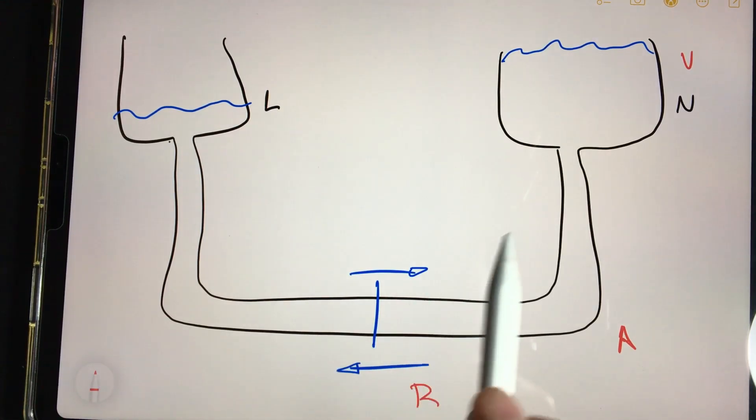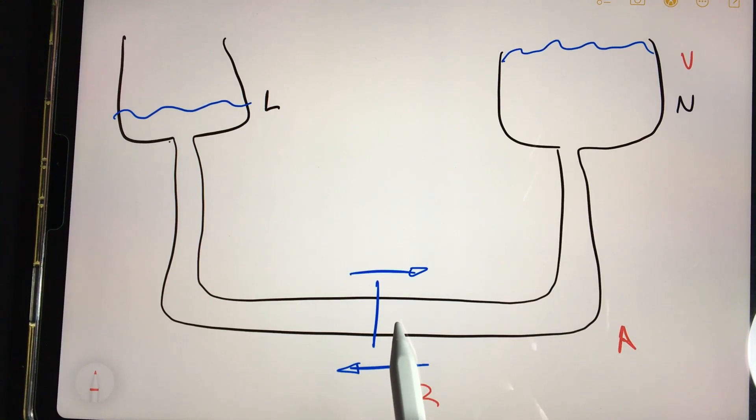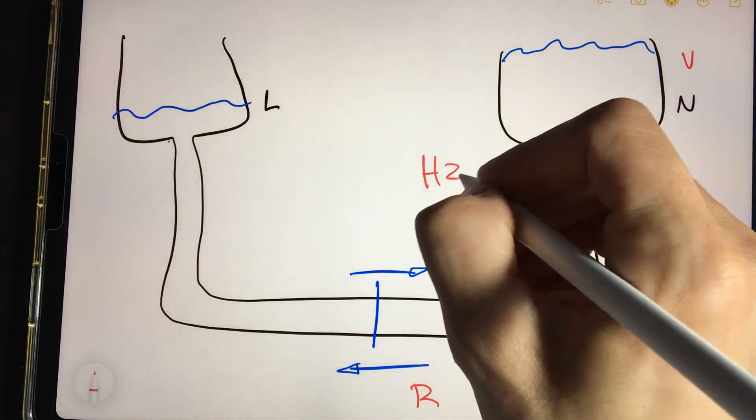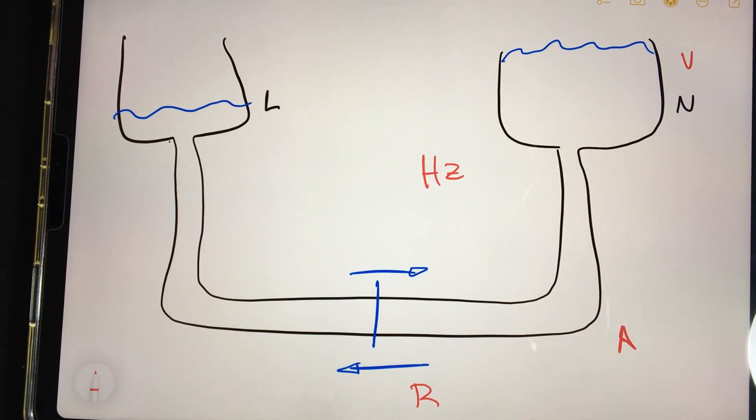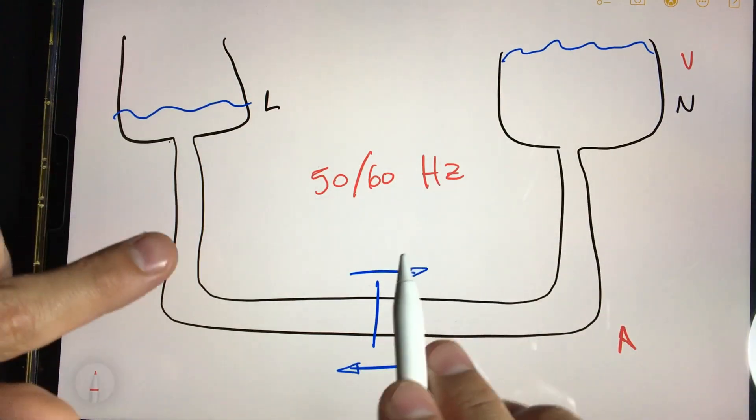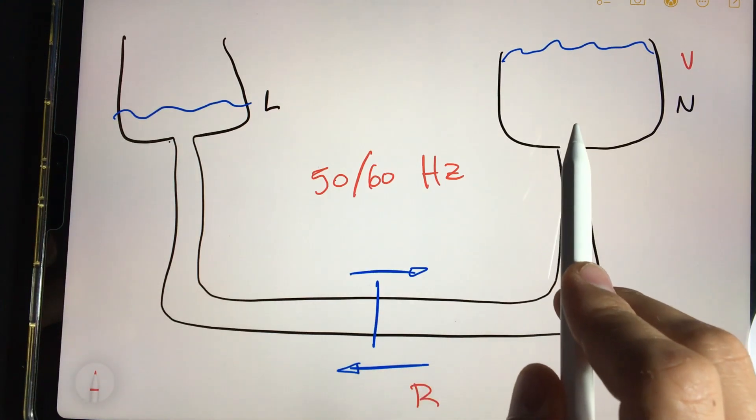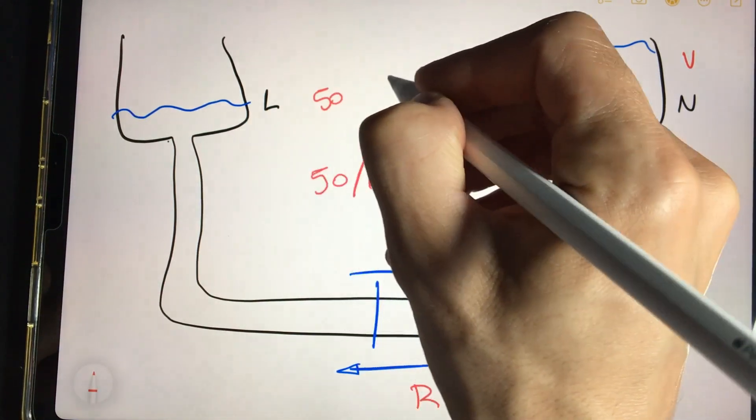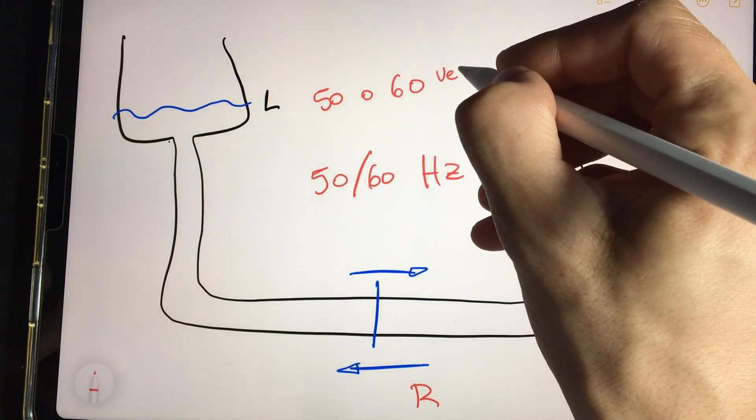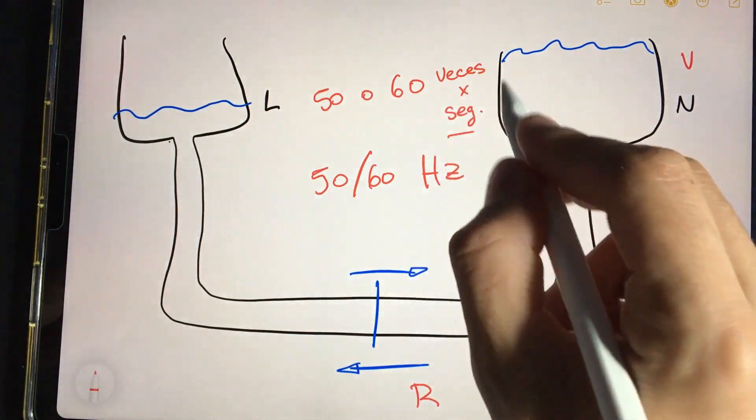But there is a more important data to take into account. How many times do the electrons go to one side and to the other? This data is the frequency. This frequency is what we measure with Hertz, in your home electricity. These Hertz are 50 or 60 depending on the country where you are. What does this mean? That the electrons are going to go to one side and to the other 50 or 60 times per second. And these times per second are Hertz.